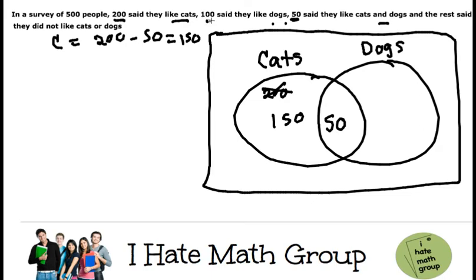Let's do the dogs. A hundred say that they like dogs. And remember, I cannot put 100 here because then I'm going to be double counting. I just do dogs equals 100 minus 50, which is going to be 50. So I put 50 right here.